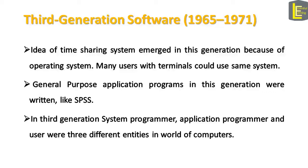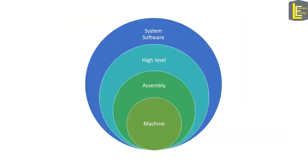General purpose application programs in this generation were written, like the Statistical Package for the Social Sciences, SPSS. In the third generation, system programmer, application programmer, and user were three different entities in the world of computers. This picture represents how system software provided abstraction to the user and the application programmer.